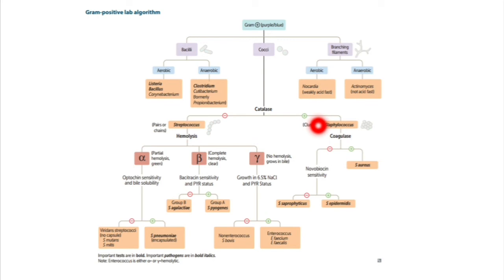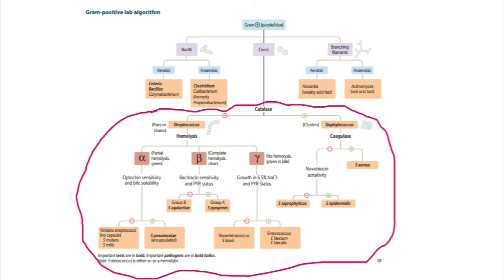This diagram covers all the bacteria we have discussed in this series. If you click the bacteriology playlist, you can watch all those videos. We have also covered other Clostridium species such as Clostridium tetani and Clostridium botulinum. In the next video, we will finish with Clostridium perfringens, completing the Clostridium species.